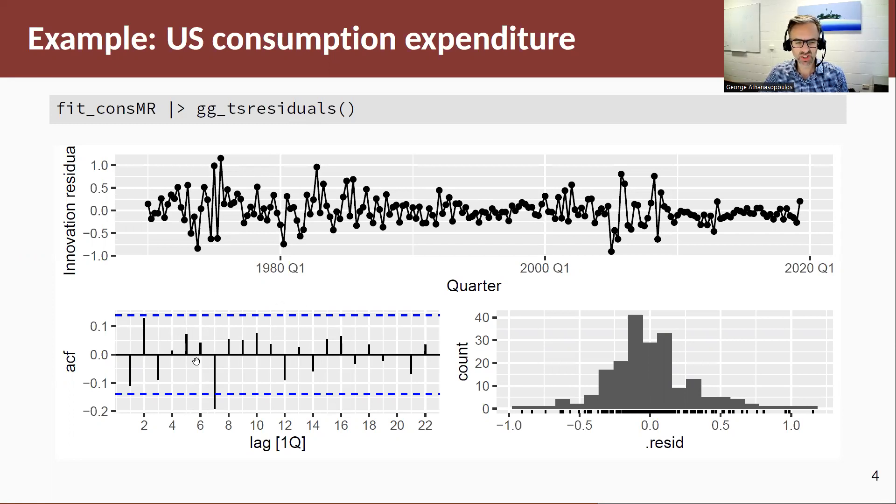The ACF also shows that there's one significant spike there at lag seven. Remember, this is quarterly data. I'm not sure what happens every seven quarters. I guess, remember that you've got a 5% probability of a type one error, so we'll just ignore that spike.